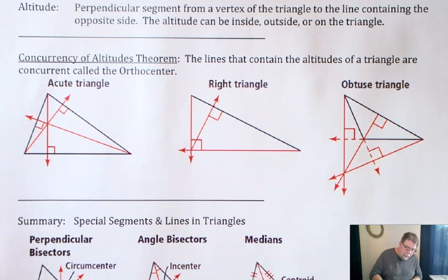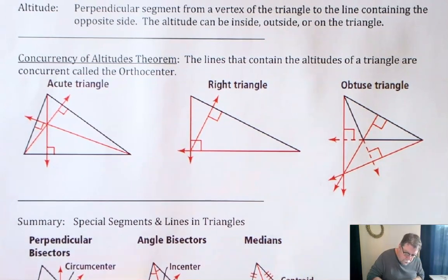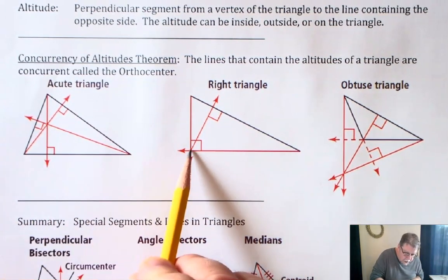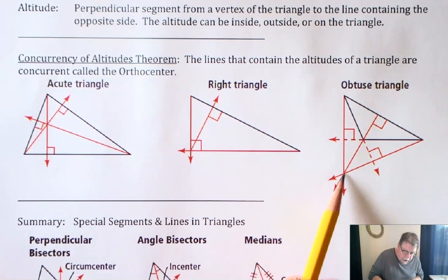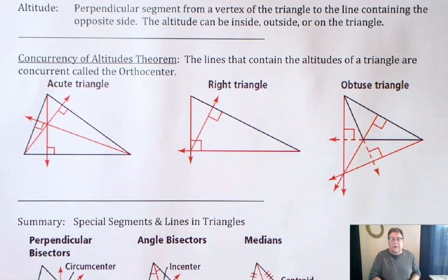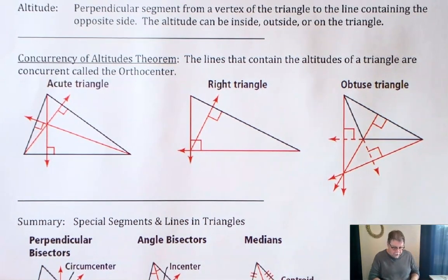The point of concurrency of the three altitudes would be those points there, and those are called the orthocenter.